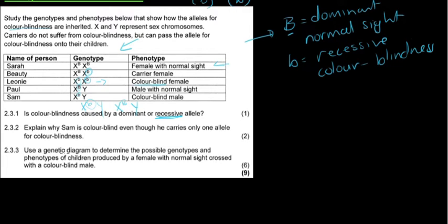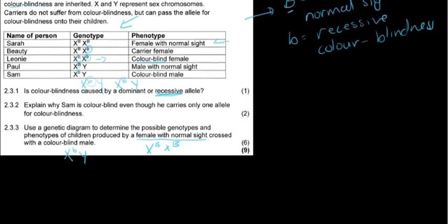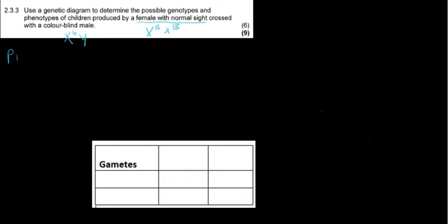Now 2.3.3: use a genetic diagram to determine the possible genotypes and phenotypes of children produced by a female with normal sight. So I would say we would use that crossed with a color blind male. Let's quickly do this cross. P1 phenotype: what do we have? A female with normal sight crossed with a male that is color blind.